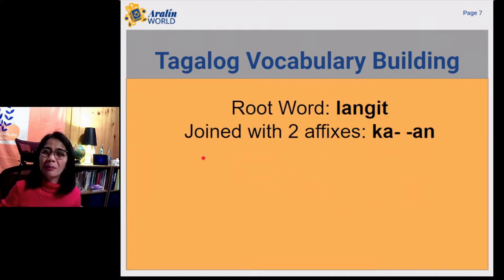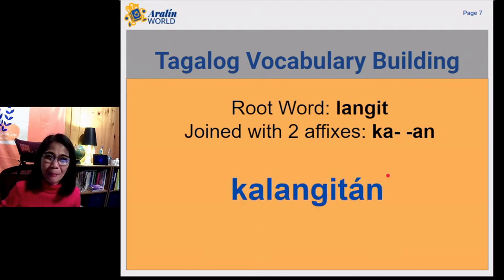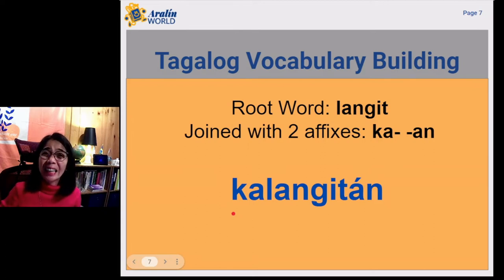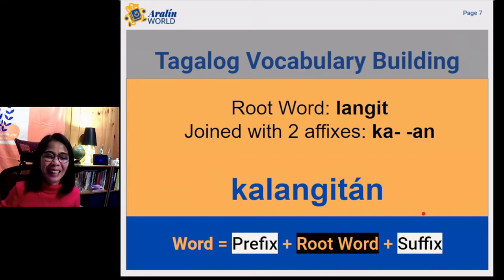To be able to expand your Tagalog vocabulary, we want prefix plus root word plus suffix. Let's have an example. Langit is the root word. We have the prefix ka and the suffix an. We can come up with a new word called kalangitan. The new word kalangitan: the prefix ka, the root word langit, and the suffix an. Kalangitan.